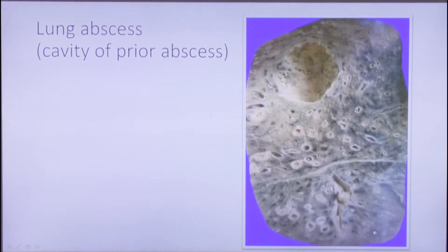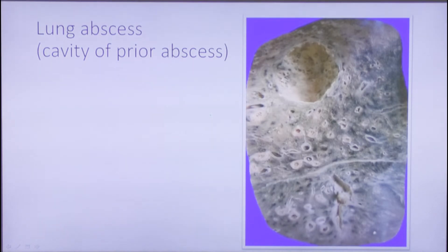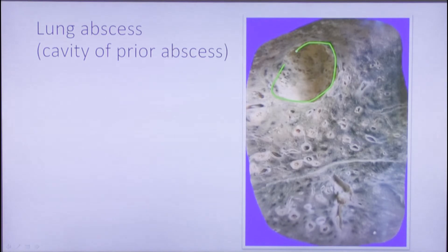Here is a lung abscess — specifically the cavity of a prior abscess. An abscess is a type of purulent inflammation and always has a capsule filled with pus. Obviously we do not see the pus here, but the cavity is present.